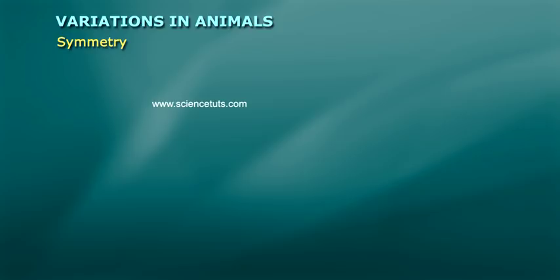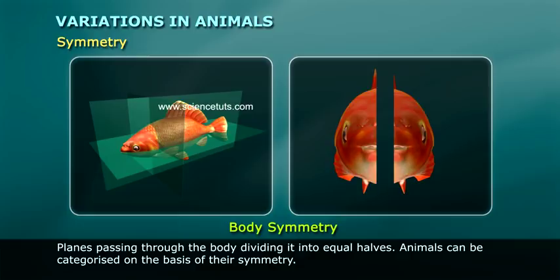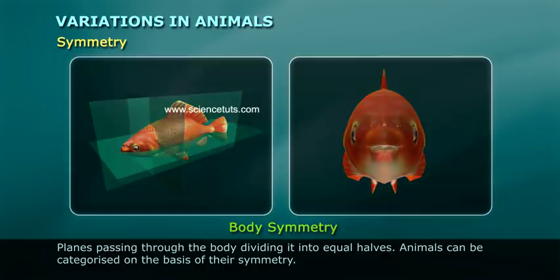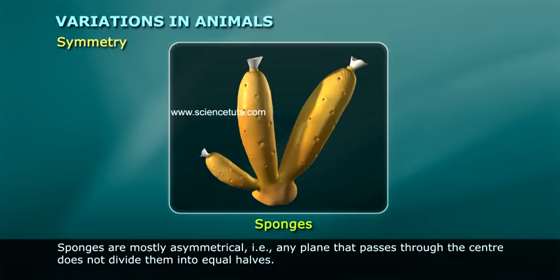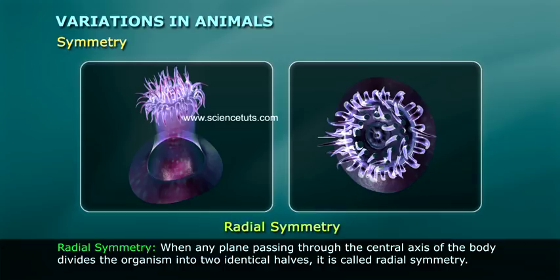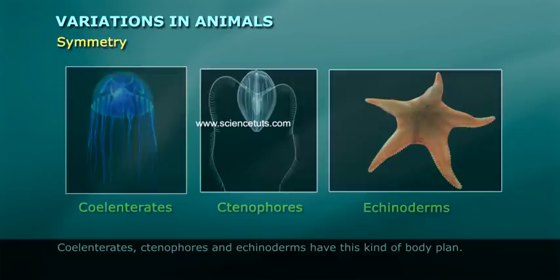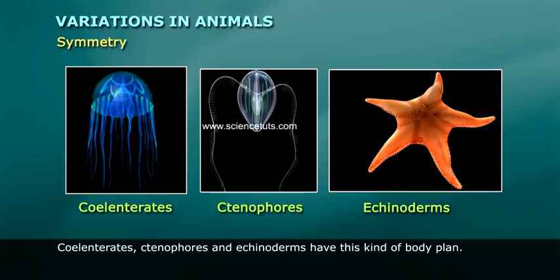Symmetry refers to planes passing through the body dividing it into equal halves. Animals can be categorized on the basis of their symmetry. Sponges are mostly asymmetrical — any plane passing through the center does not divide them into equal halves. Radial symmetry is when any plane passing through the central axis divides the organism into two identical halves. Coelenterates, ctenophores, and echinoderms have this kind of body plan.